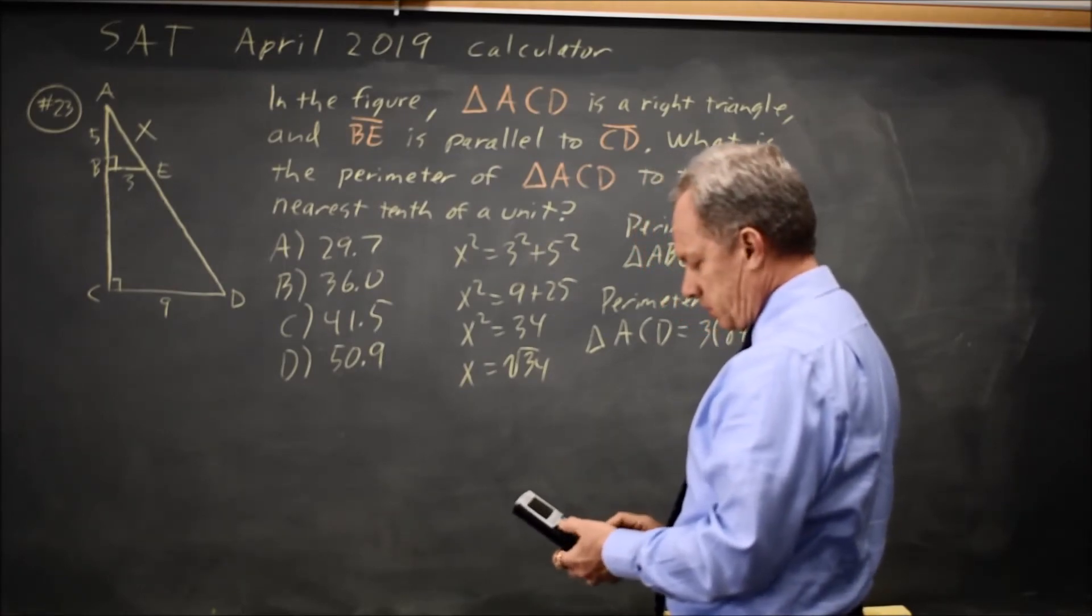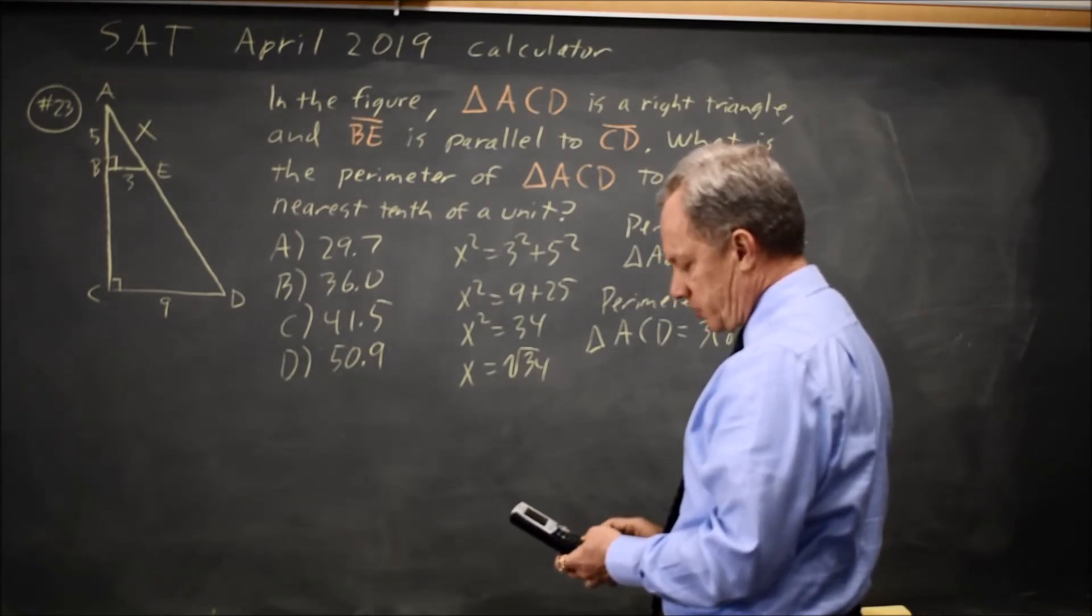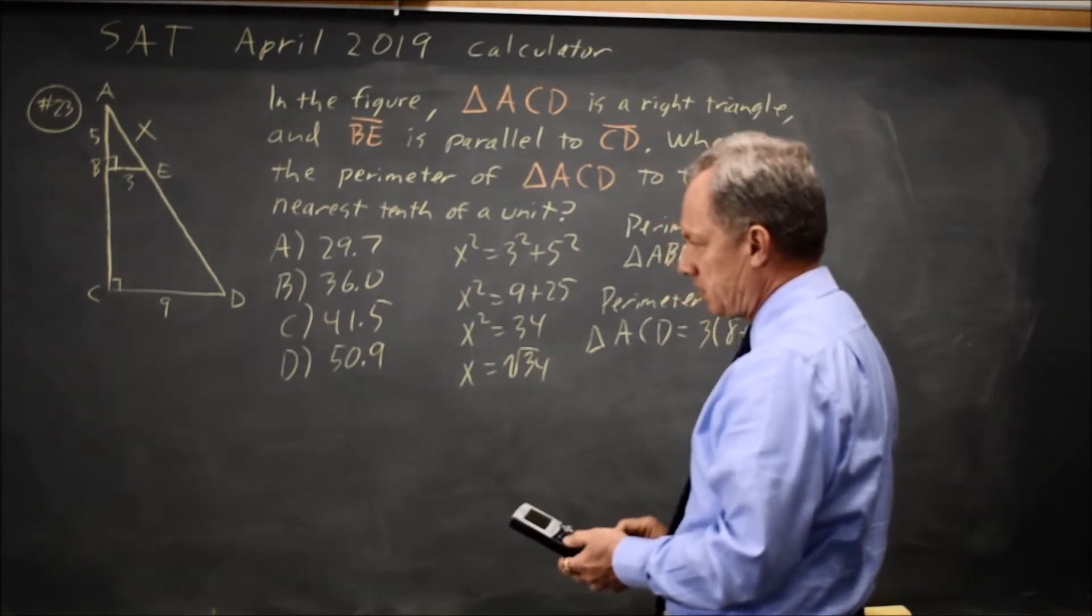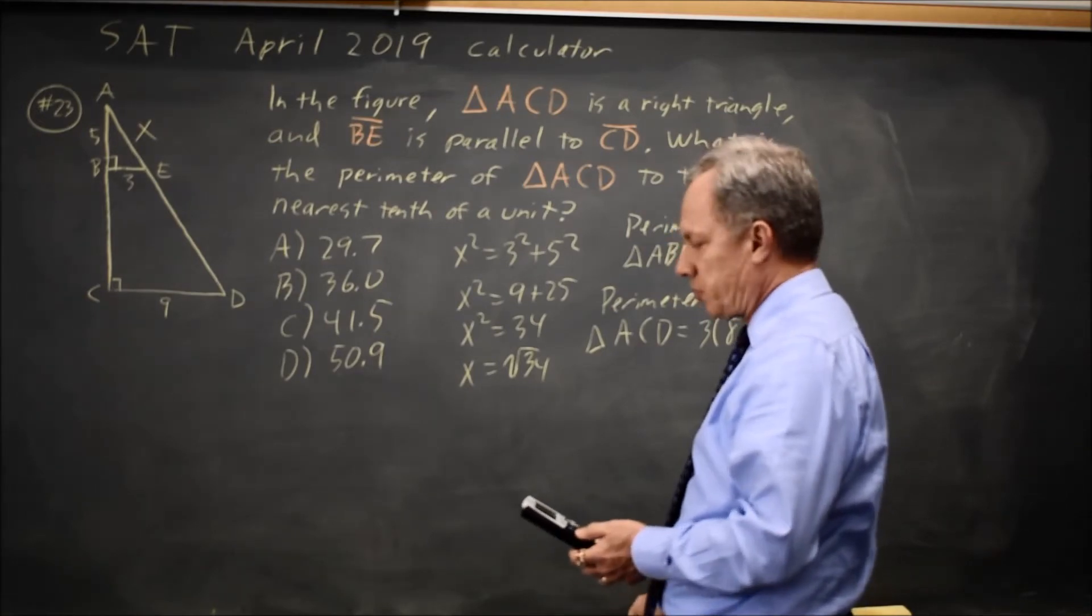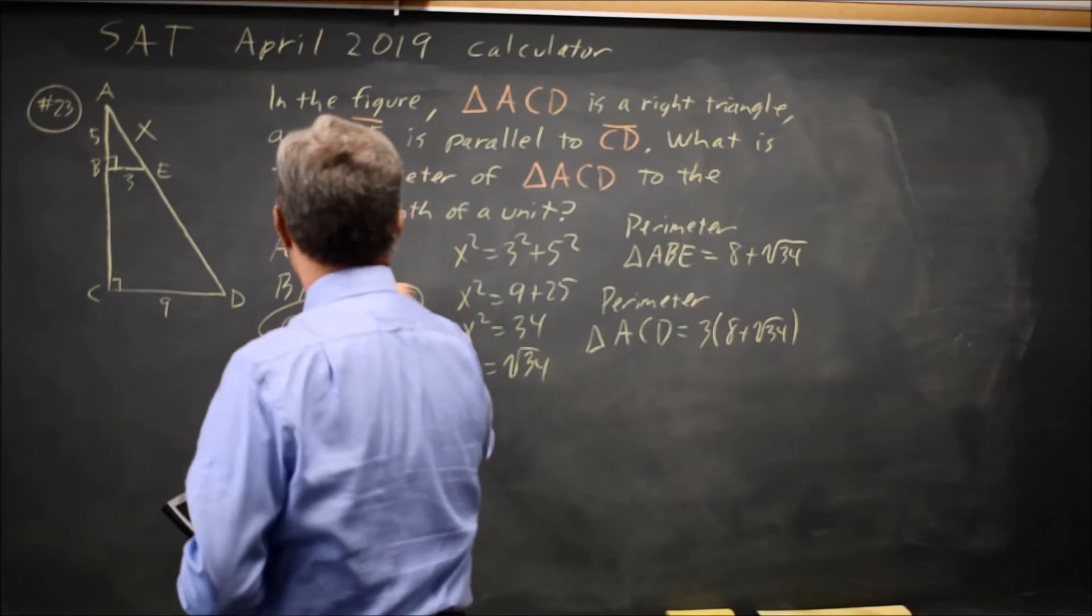8 plus root 34 is 13.83, times 3 is 41.5 to the nearest tenth, so that would be choice C.